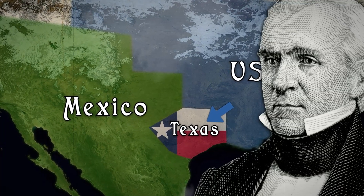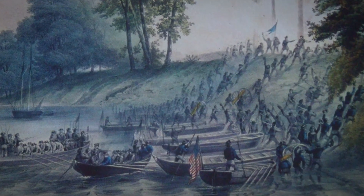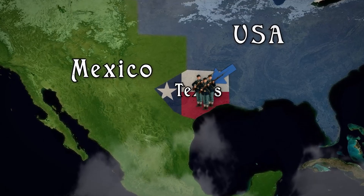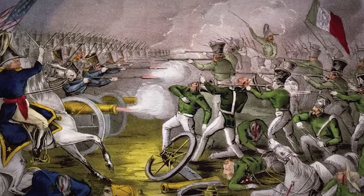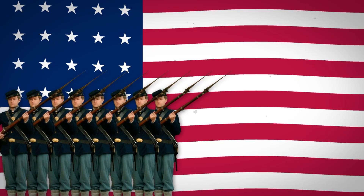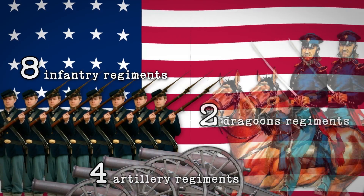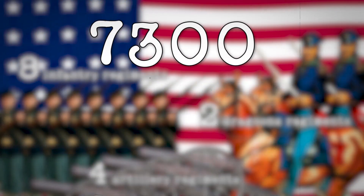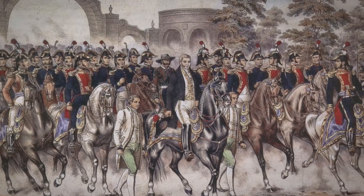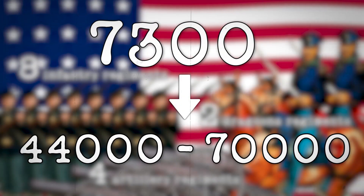He sought to expand American territories to the west and south. In pursuit of expansion, Polk offered to buy the land, but his offer was rejected. It soon sparked conflict by sending troops into the disputed area between the Rio Grande River and the Nueces River, which both countries had previously considered part of Mexico. At the time the conflict with Mexico began, the regular U.S. army consisted of eight infantry regiments, four artillery regiments, and two dragoons. At the beginning of the war, the U.S. army had a strength of 7,300 men. By the end of the conflict, according to various accounts, it had grown to between 44,000 and 70,000 men.